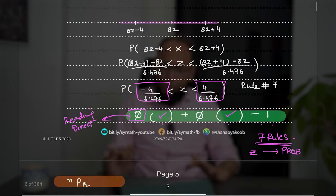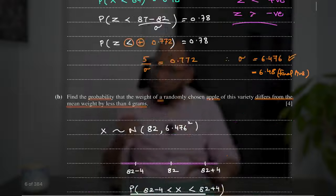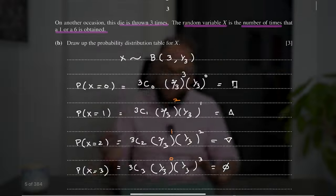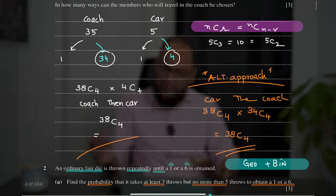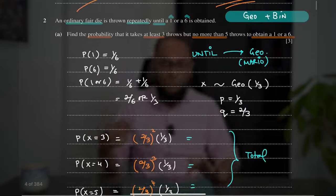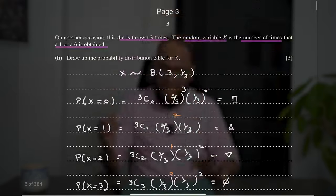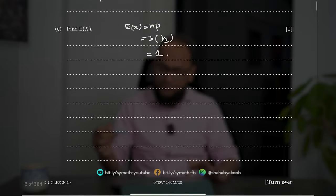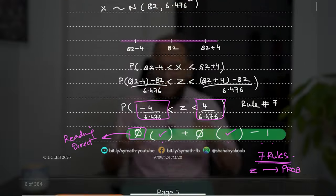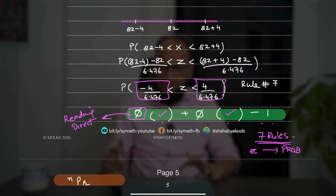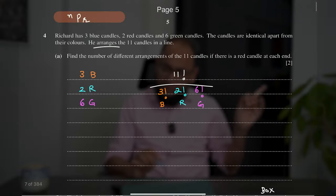So far, three questions are straightforward: the 3-mark combination question, then the 8-mark geometric/binomial question, and the 7-mark normal distribution question. These three can comfortably be completed in around 15 minutes.